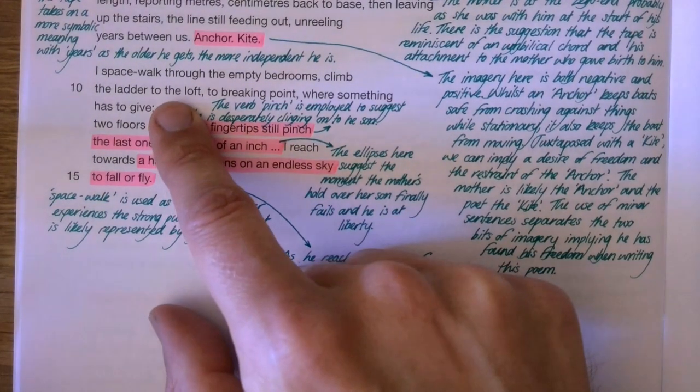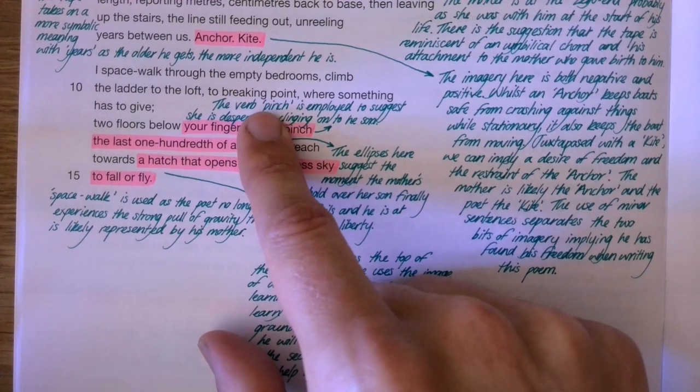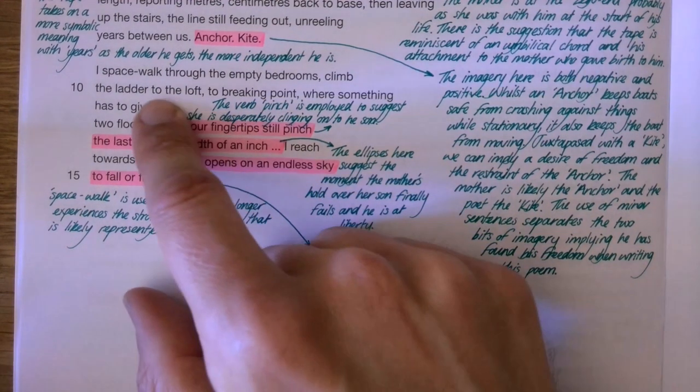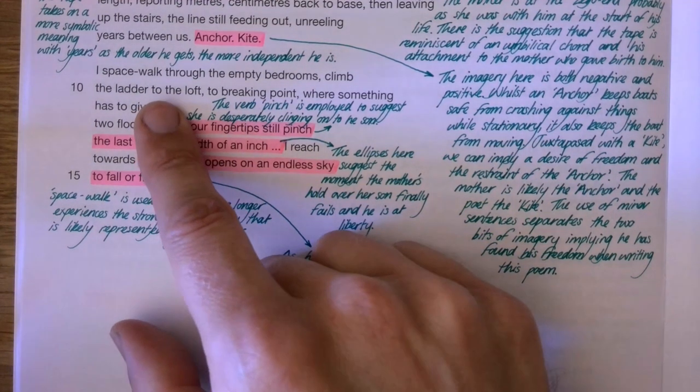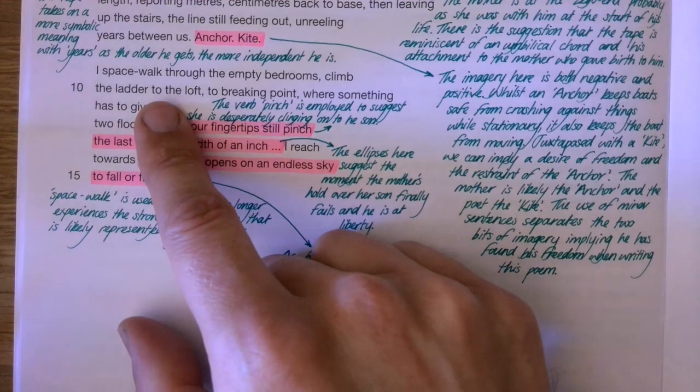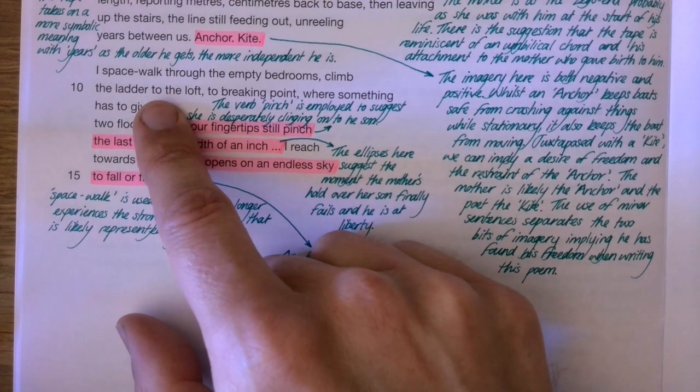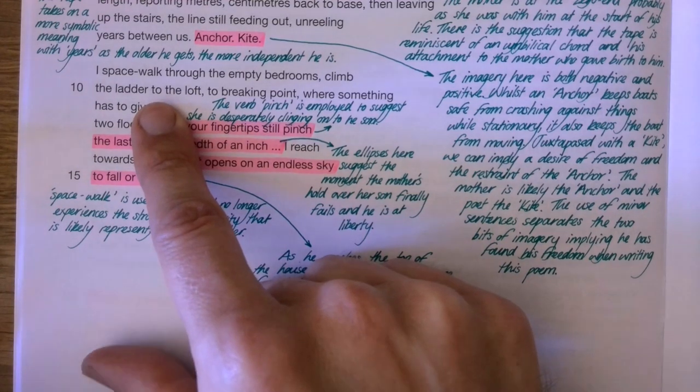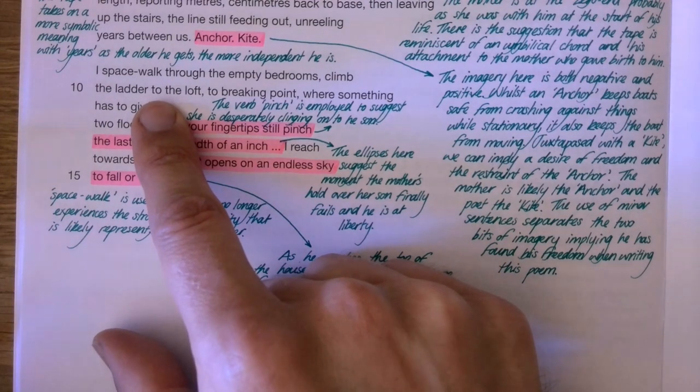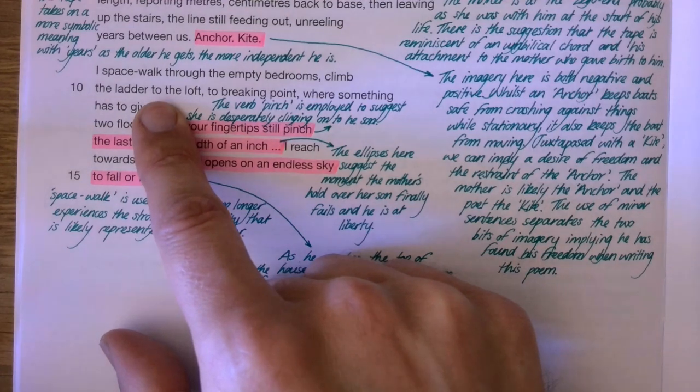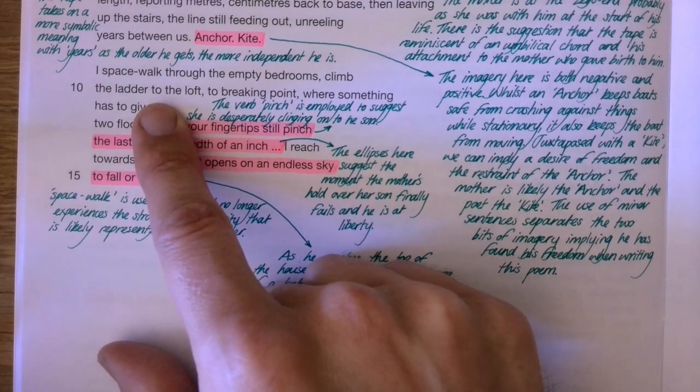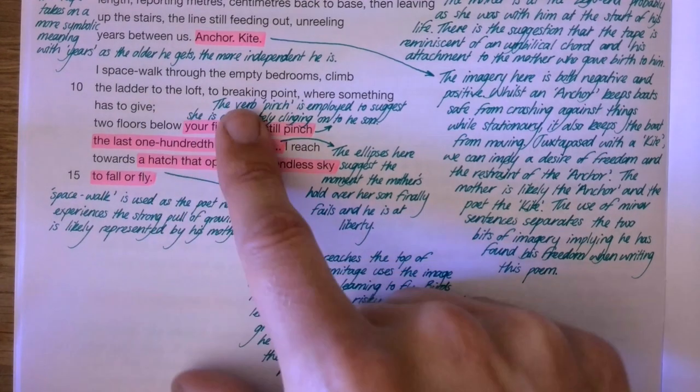Moving on then, he talks about: I spacewalk through the empty bedrooms. This bit of imagery is really quite nice. The idea of him spacewalking through the empty bedrooms suggests that he no longer has the same amount of gravity that he used to have. The gravity would probably be represented from his mother who kind of pins him down, keeps him to the earth. So the idea that he's now spacewalking suggests that he feels less gravity, is getting more independent because he's got much more freedom of movement. He's not pinned down by things like gravity.